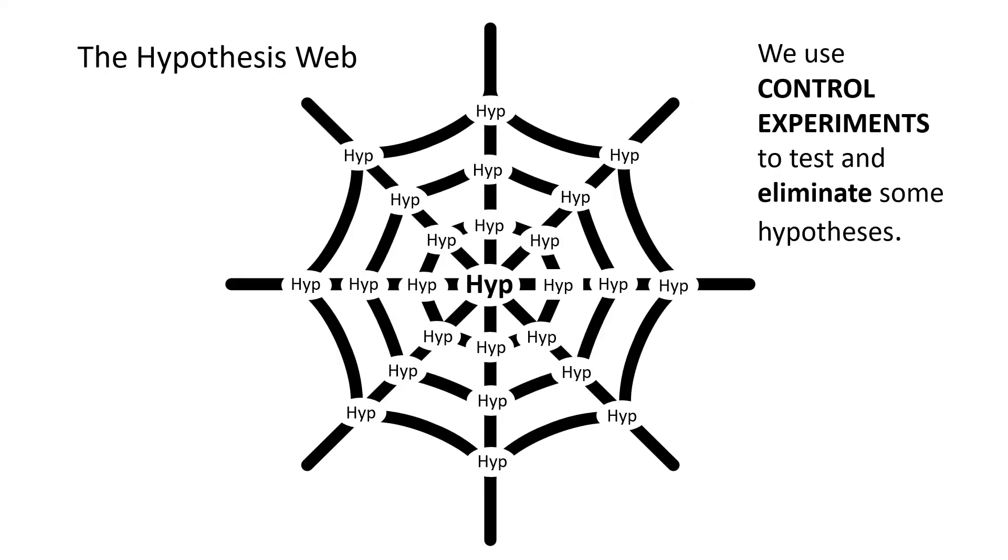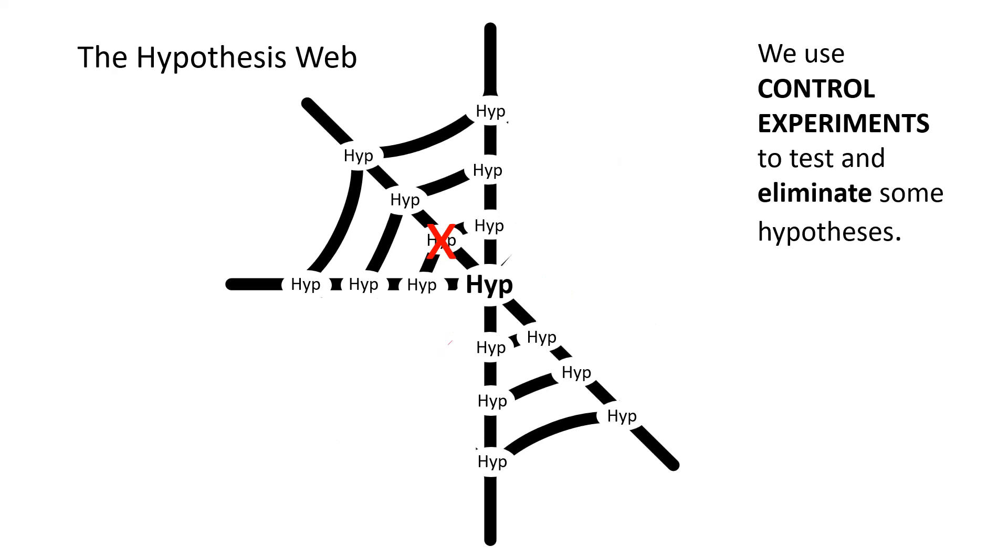So here is an example of our main hypothesis embedded in the web of hypotheses. And the first thing that science does is do control experiments to test and eliminate some hypotheses. So for example, in the case of the fish in the lake, it might do a test to confirm that the fish in the lake are sensitive to acidic water, and so on. There are a number of these control experiments that would be done. Now notice, when control experiments have eliminated some hypotheses, they've actually simplified the web in many ways.